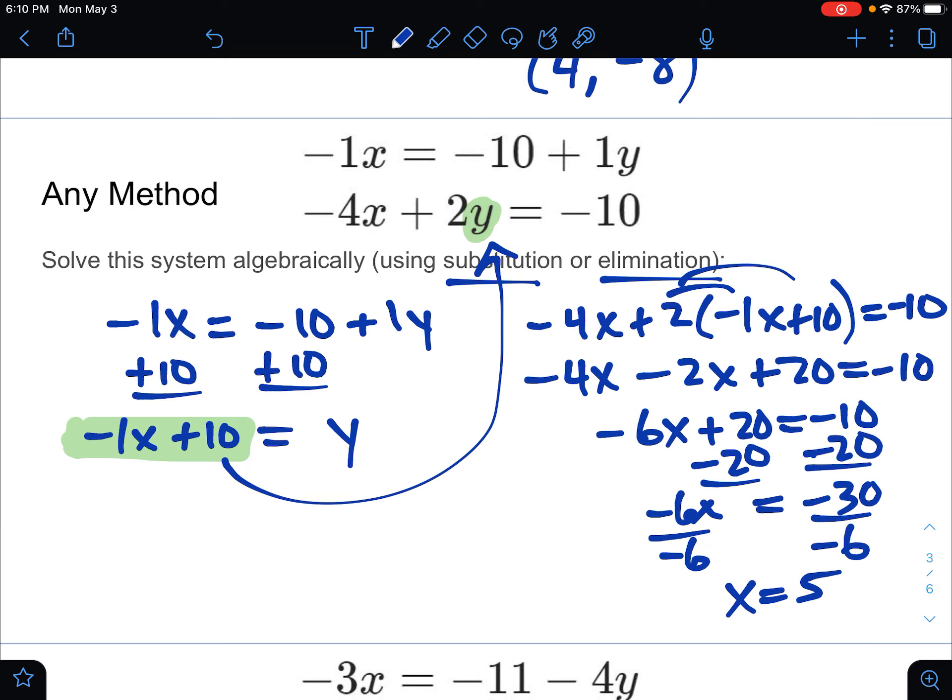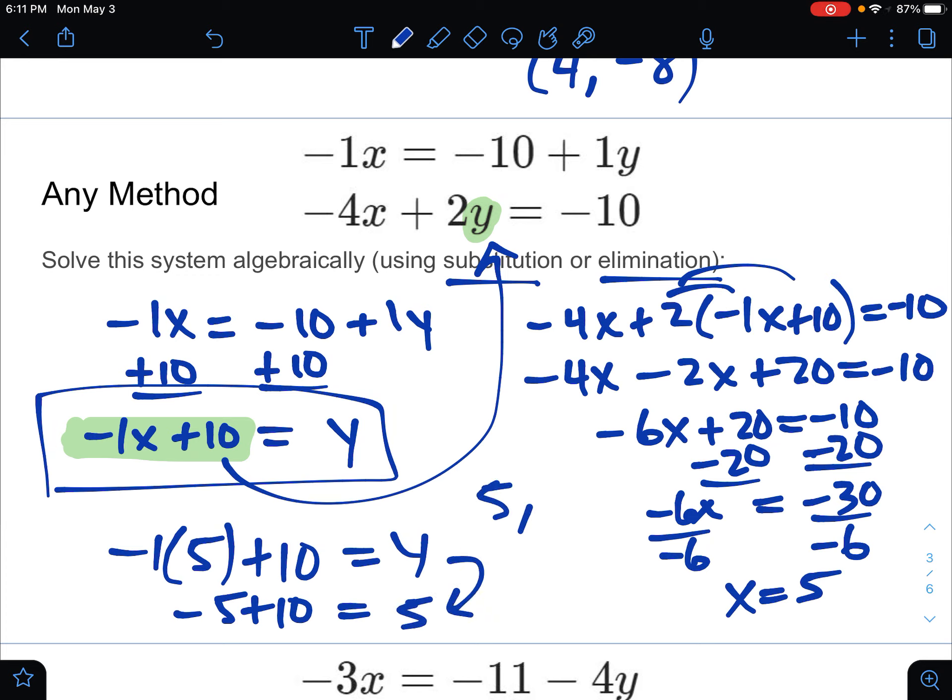So we want to get y once we have x. I'm going to use a new equation over here. So negative 1 times our x plus 10. That's our y. So negative 5 plus 10, which is 5. So that is y. So actually, in this case, it's 5, 5. They're both 5. That's our solution to this system using substitution.